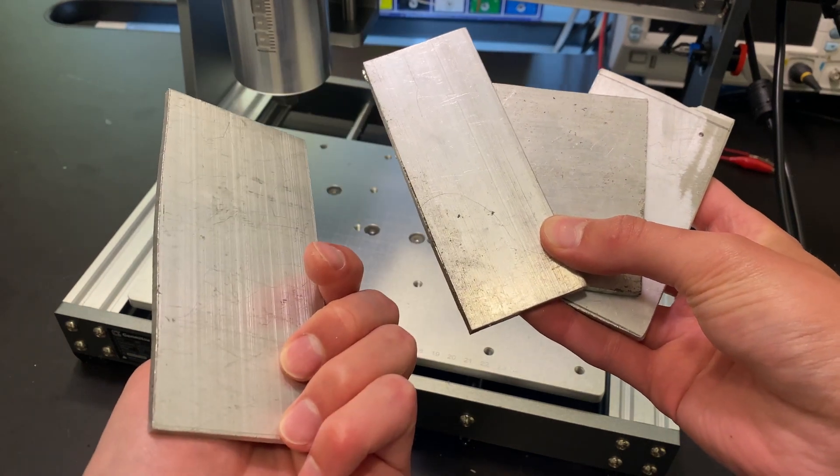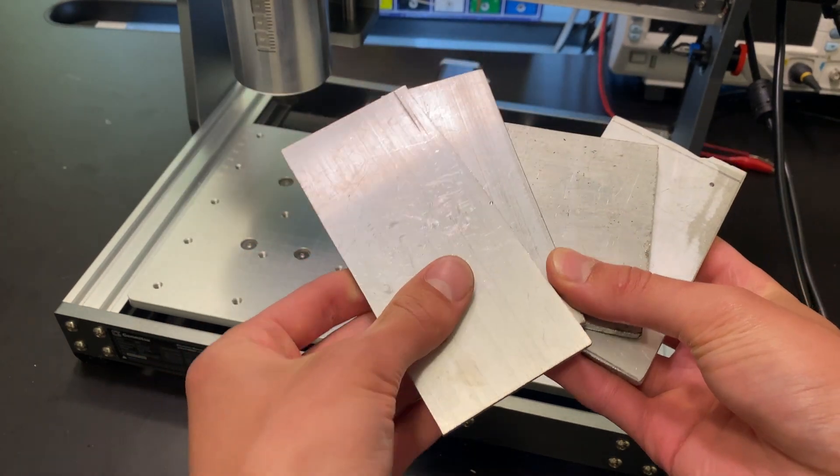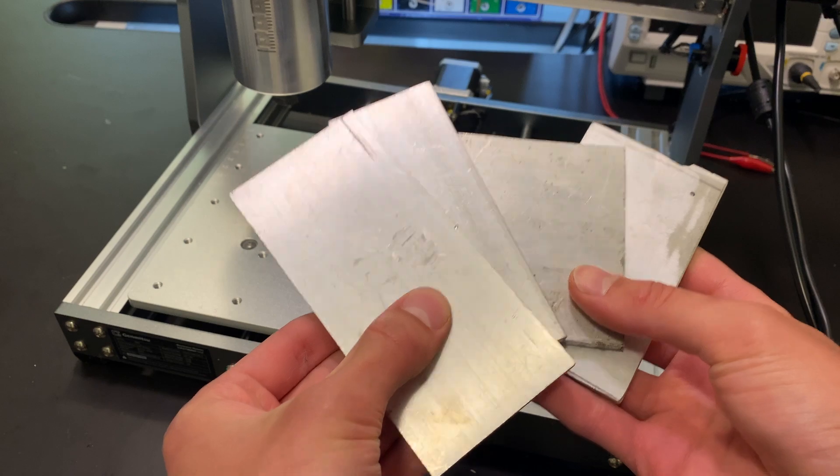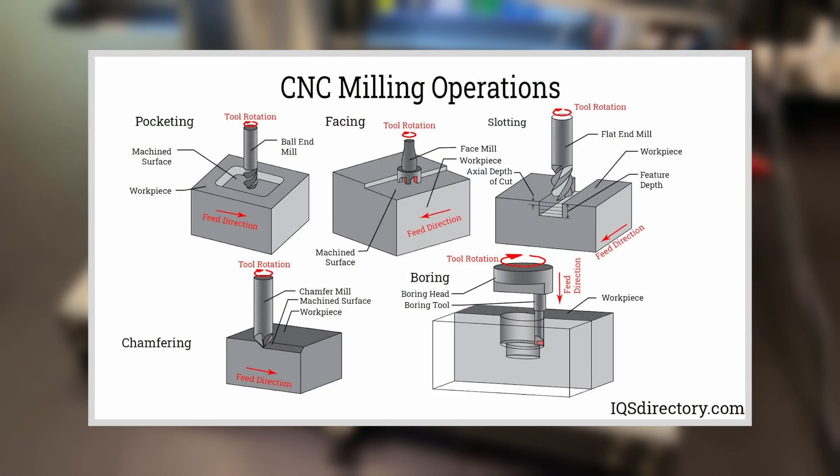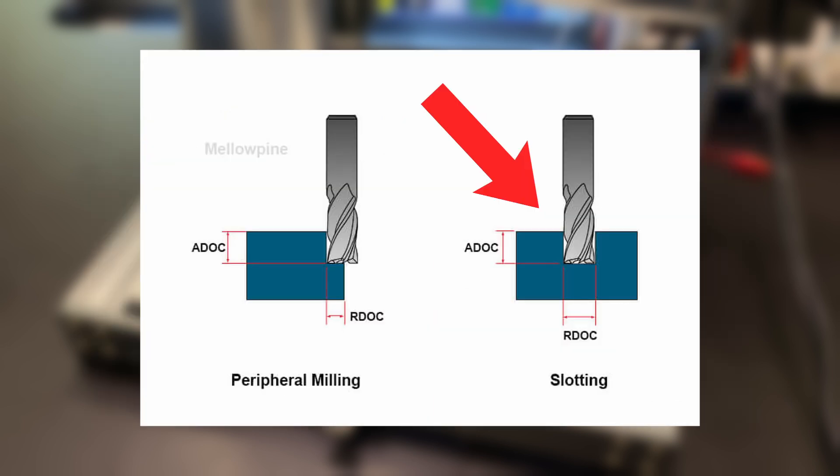Metals of any kind have always been at the edge of the capability of these desktop style CNC machines, so I want to see if we can do the most aggressive cutting operation in aluminum, slotting. Slots require the entire front side of the bit to be engaged with the material, putting incredible force on the bit. When machining metals with less rigid machines, you usually want to stick to other kinds of clearing operations that only allow a small portion of the bit to come in contact with the material at a time.